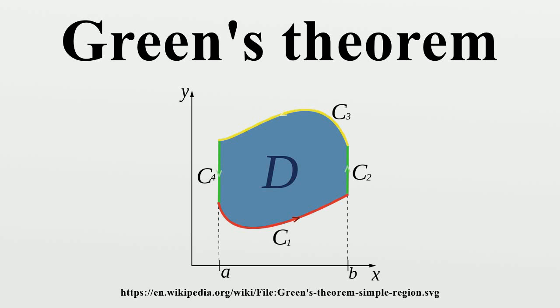In mathematics, Green's theorem gives the relationship between a line integral around a simple closed curve C and a double integral over the plane region D bounded by C. It is named after George Green and is the two-dimensional special case of the more general Kelvin-Stokes theorem.